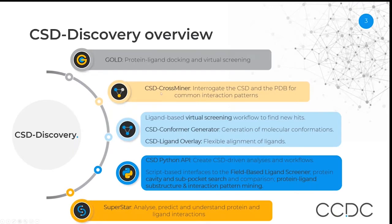The first package is GOLD, our protein-ligand docking package that can be used for docking and virtual screening. Then you have access to CSD CrossMiner, a tool that allows you to interrogate the CSD and the PDB for common interaction patterns. If one doesn't have access to the protein structure, one can follow the ligand-based virtual screening workflow, which also has access to the CSD conformer generator and the ligand overlay.